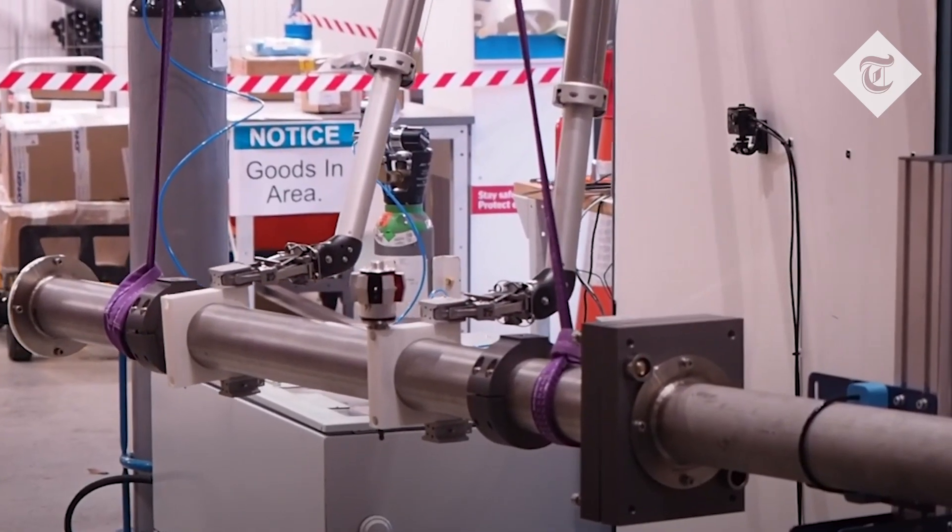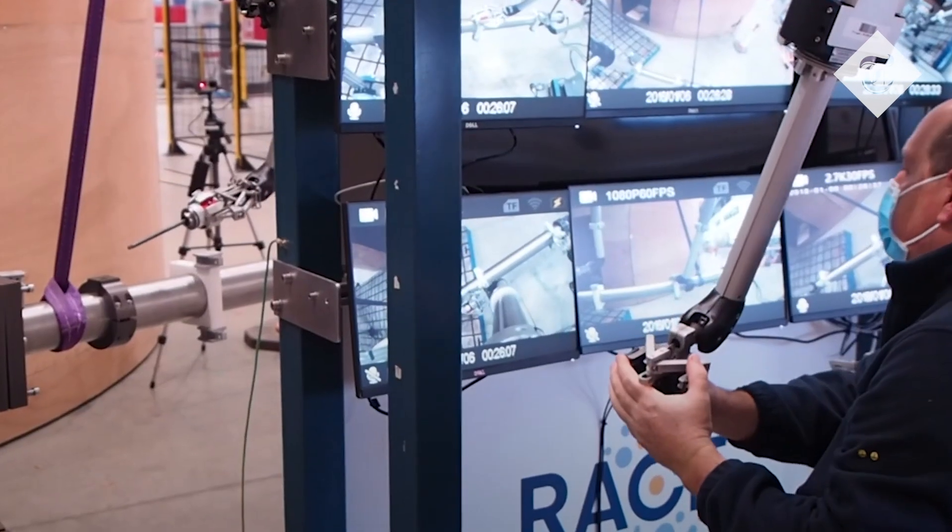Usually robotic welding happens from outside of the pipes, but due to the space constraints in DEMO we need to achieve all of these operations from inside.